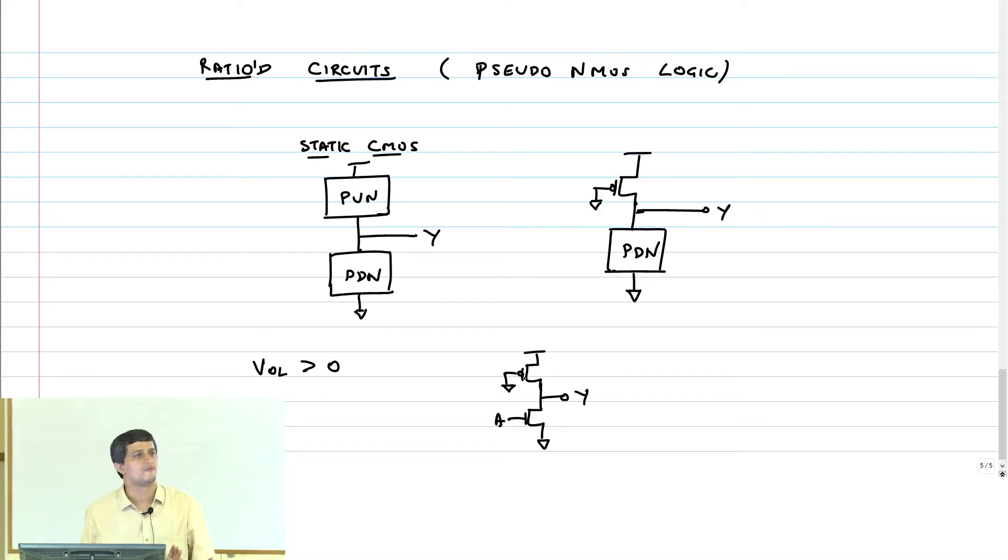This is a pseudo NMOS inverter, only one NMOS transistor connected to the input A. A is not connected to the PMOS transistor. So I now want to calculate what happens when A equals VDD. Y will be VOL. Of course, VOL now has to be close to ground, otherwise this gate is going to be useless. So in what region of operation will my NMOS transistor be in, what region of operation will the PMOS transistor be in?